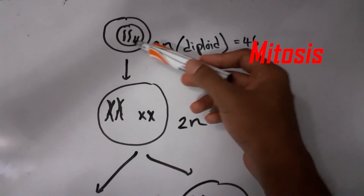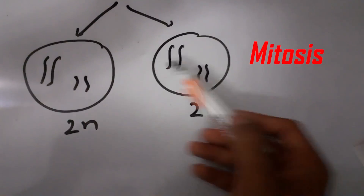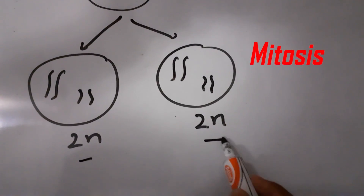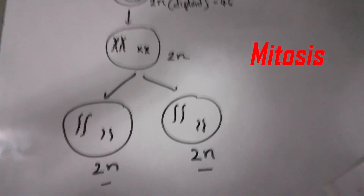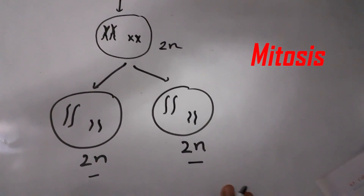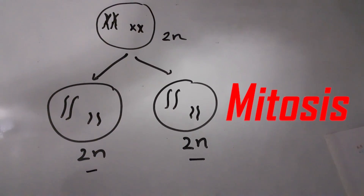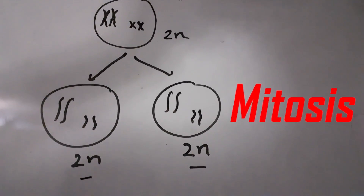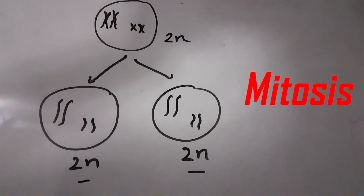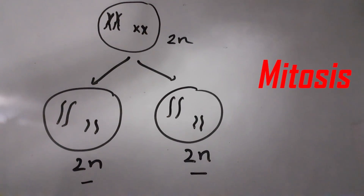At the start we had two homologous chromosomes, and at the end we also have two homologous chromosomes. The 2N number, or the diploid number, hasn't changed. Cell divisions like this are called mitosis — it is the type of division in which the cell divides while maintaining a constant number of chromosomes.